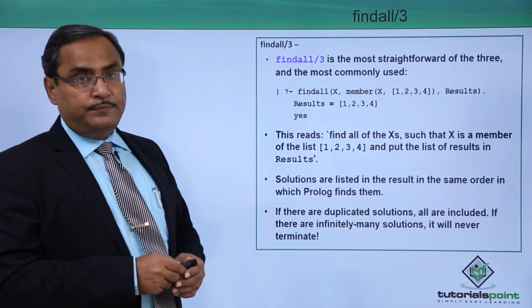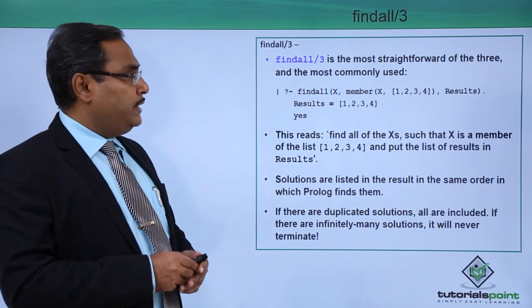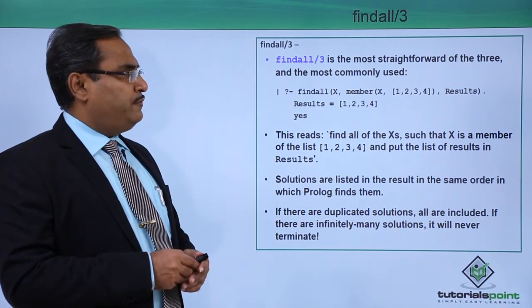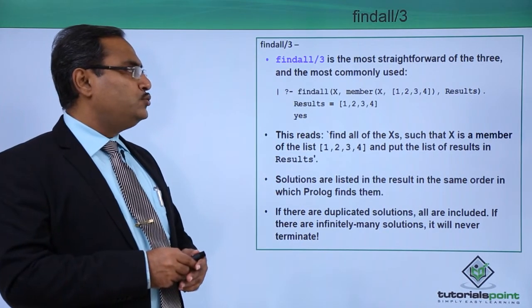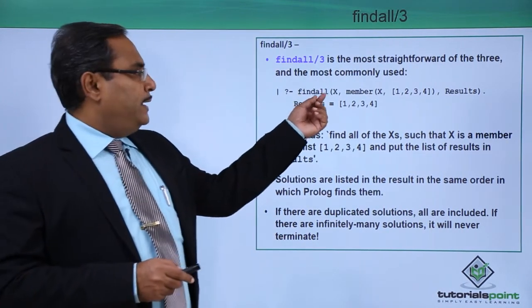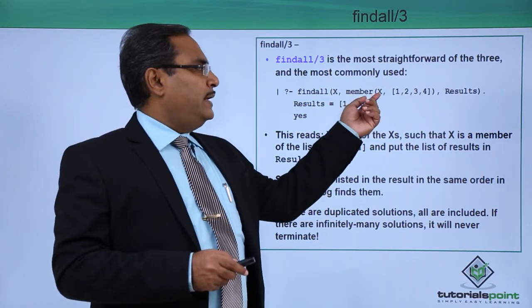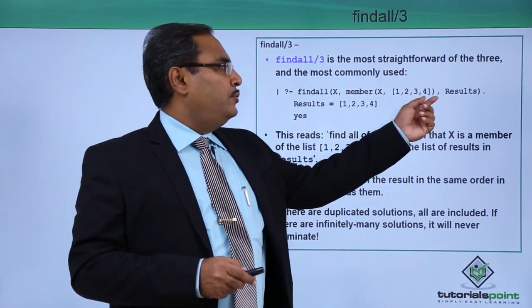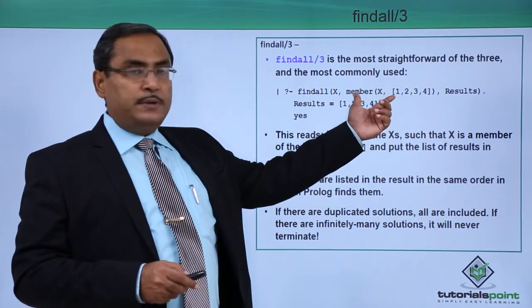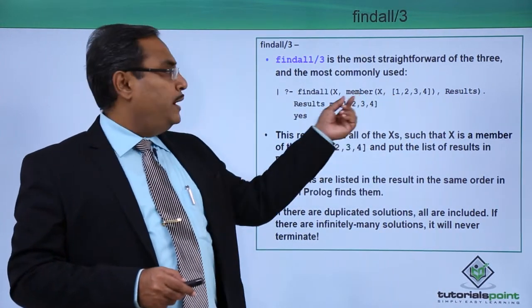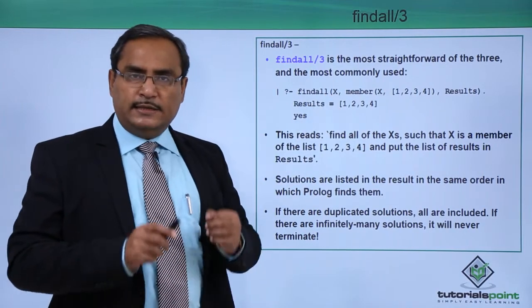Here is the respective details. Findall/3 is the most straightforward of the three and the most commonly used. That is findall(X, member(X, [1,2,3,4]), Results). So Results is the third argument, this member clause is the second argument, and this variable X is the first argument.